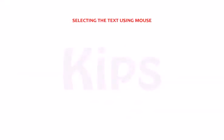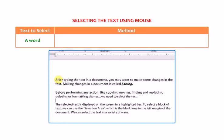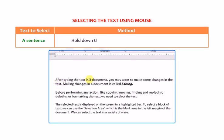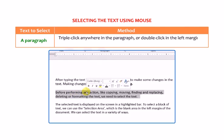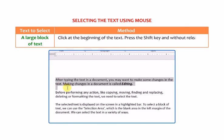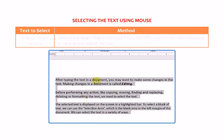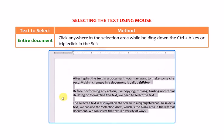Let me quickly tell you how to select text using the mouse. To select a word: double-click on the word. To select a sentence: hold the Ctrl key and click anywhere on the sentence. To select a paragraph: triple-click anywhere in the paragraph or double-click in the left margin. To select a large block of text: click at the beginning, press Shift and click at the end. To select the entire document: hold Ctrl+A or triple-click in the selection area.